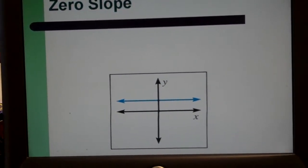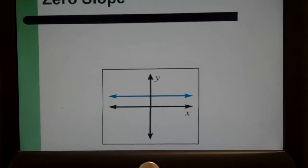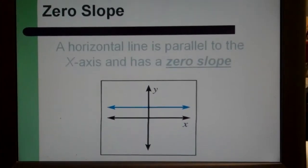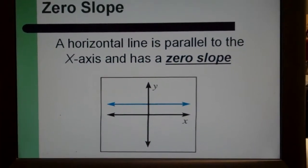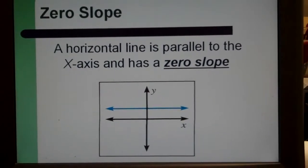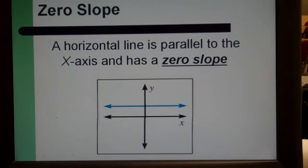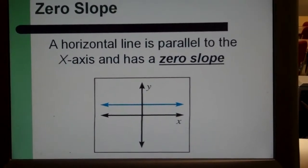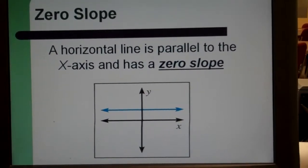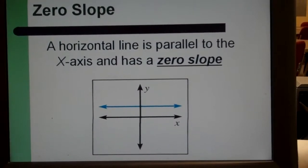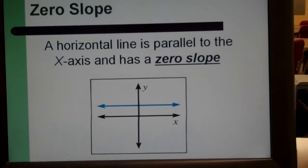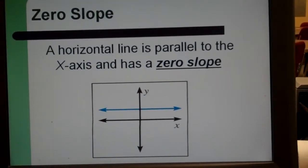The next kind of slope we have is the zero slope. This is a line that's just horizontal. It's parallel to the x-axis. That slope is zero because it's going up zero. It's going down zero. So the rise is zero. And the run could be any number. You could go over one or over two or over three. You're still going up or down only zero. So that slope is zero.